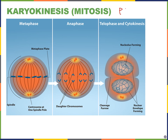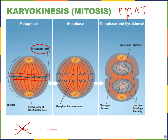After prophase and pro-metaphase comes metaphase. In metaphase, the chromosomes line up at the equator of the cell — sometimes called the metaphase plate. Each of the sister chromatids is on one side of that metaphase plate, because ultimately they're going to be pulled apart to the two new cells. They're aligned by the spindle fibers that came out of the centrosomes.